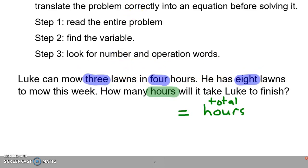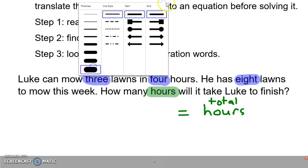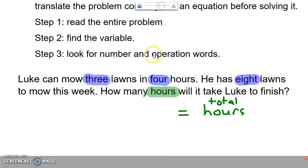I'm going to look for my operations. Luke can mow three lawns in - 'in' is an operation word that's going to be division. So three lawns in four hours. Then he has eight lawns to mow this week - no operation there. How many hours will it take Luke to finish?